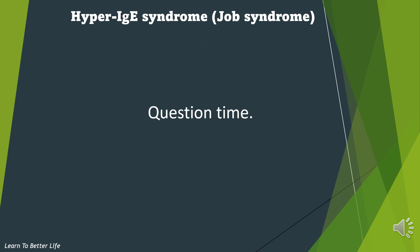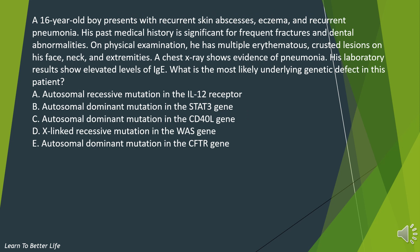A 16-year-old boy presents with recurrent skin abscesses, eczema, and recurrent pneumonia. His past medical history is significant for frequent fractures and dental abnormalities. On physical examination, he has multiple erythematous crusted lesions on his face, neck, and extremities. A chest X-ray shows evidence of pneumonia, and his laboratory results show elevated levels of IgE.